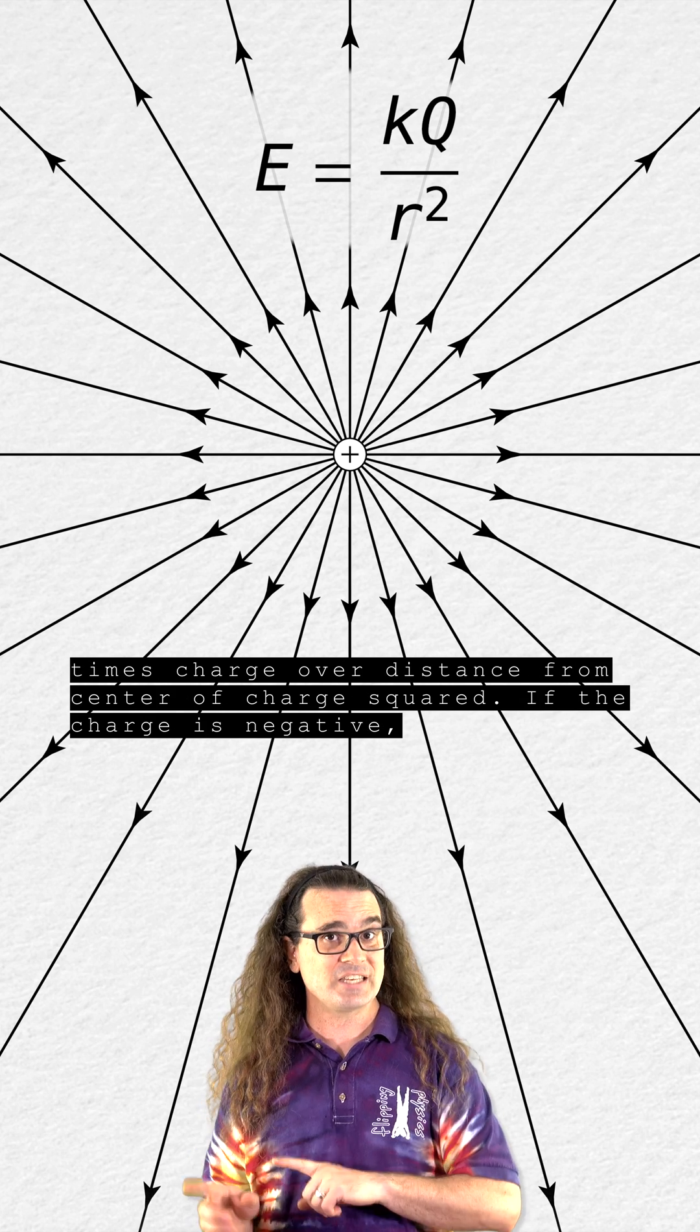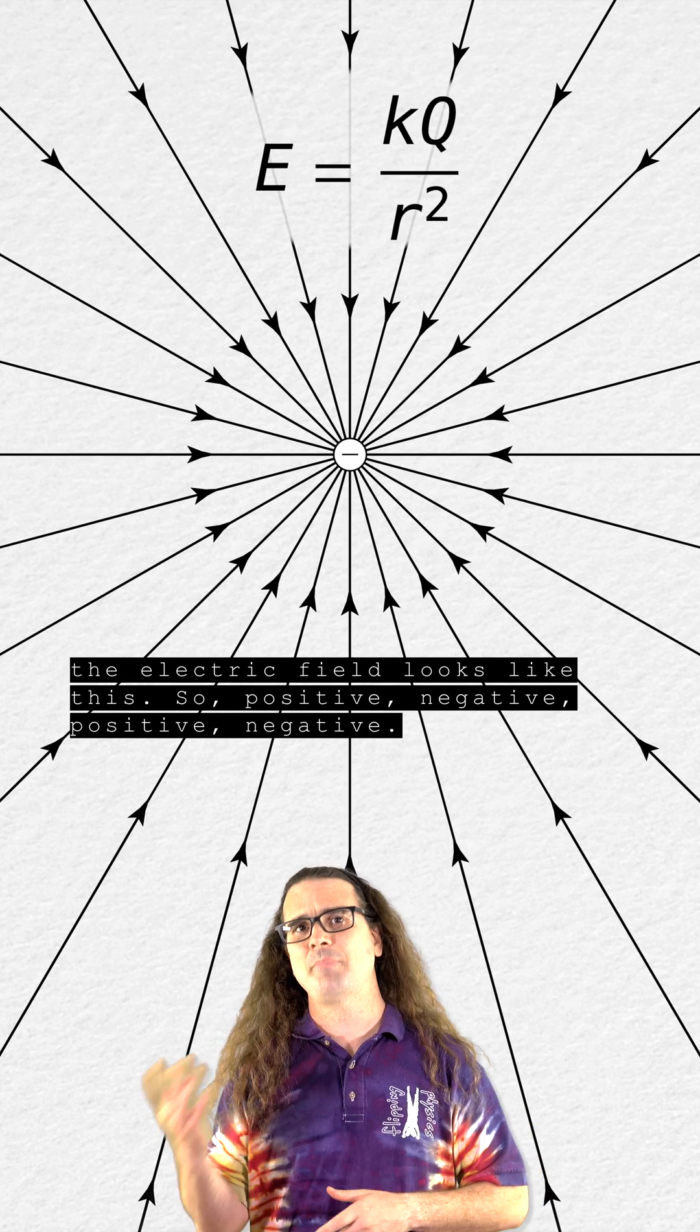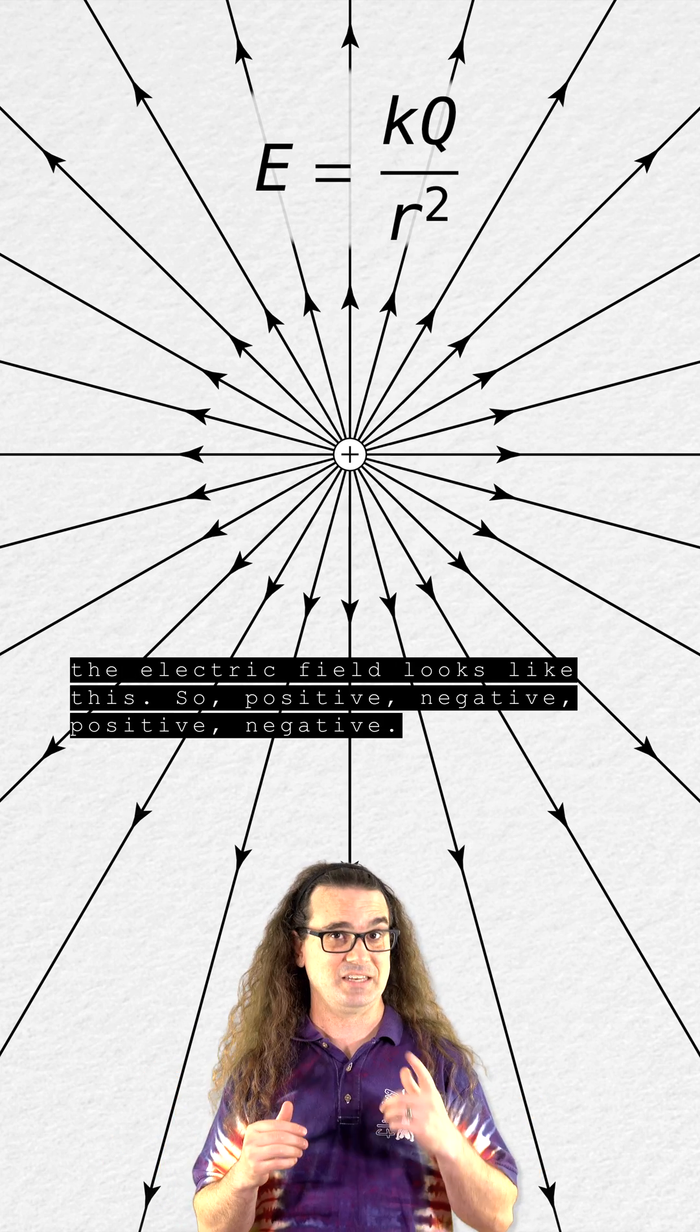If the charge is negative, the electric field looks like this. So, positive, negative, positive, negative.